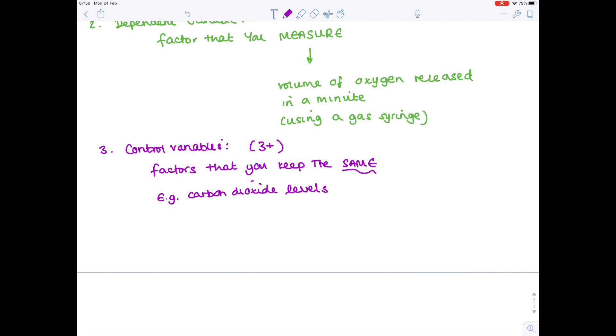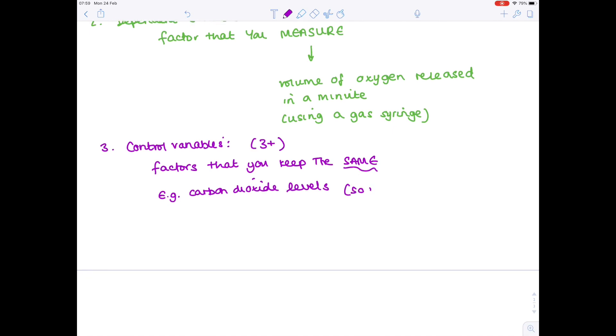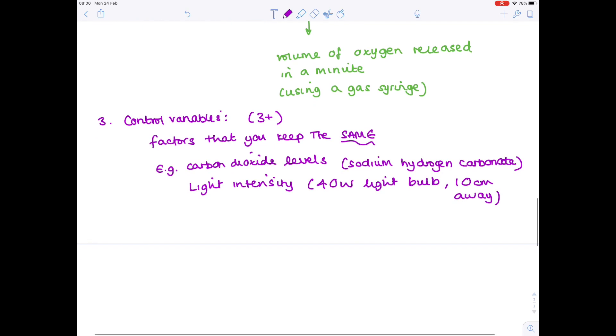And this is something you can actually control using sodium hydrogen carbonate, which is a substance you add to provide carbon dioxide to a water plant. And you can control how much of that you add. The light intensity also needs to be controlled if you're investigating temperature. So that could be using a 40 watt bulb and make sure it's held the same distance away each time. The other important things we need to keep the same is the plant species. And we tend to use pond weed known as elodea in these experiments. How much of the pond weed you have is also going to be important. If you have a much longer length for some experiments, clearly they're going to be photosynthesizing more. So maybe five centimeters.